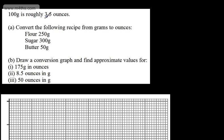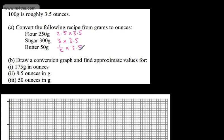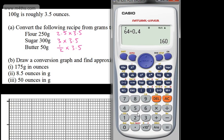Let's look at another question. We're told 100 grams is roughly 3.5 ounces. In part A, we're asked to convert a recipe from grams to ounces. For 250 grams — that's 2.5 times 100 — so we do 2.5 × 3.5. For 300 grams, that's 3 times 100, so 3 × 3.5. And for 50 grams, that's half, so 0.5 × 3.5. So 2.5 × 3.5 gives us 8.75 ounces.